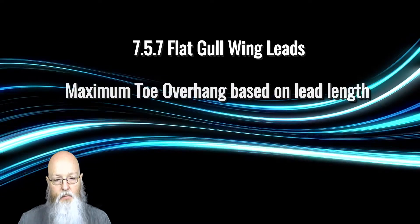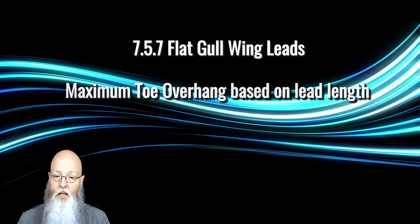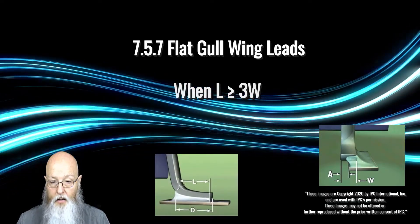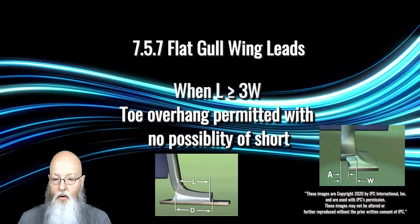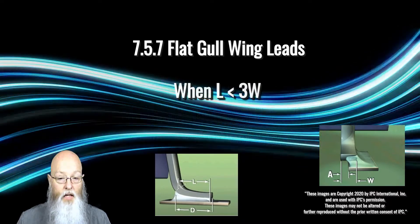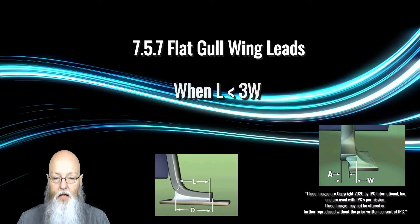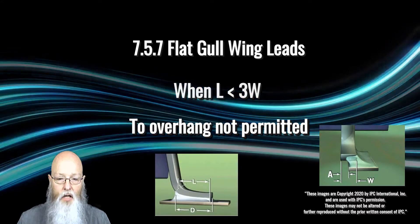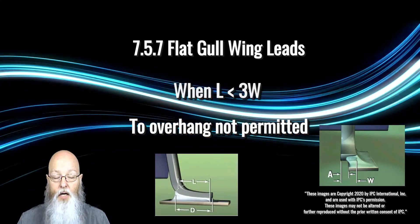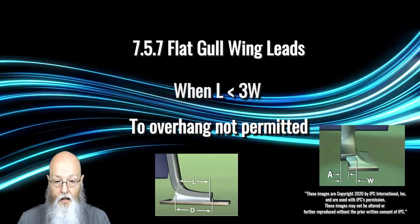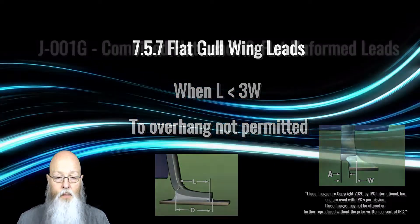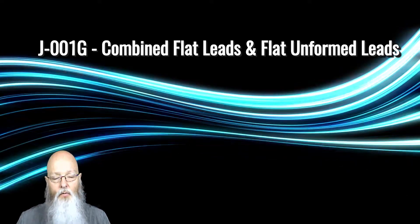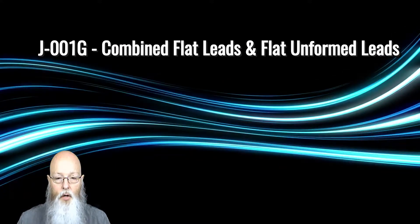On the other hand, the maximum toe overhang has been broken out based on lead length. With a longer lead — lead length greater than three times the lead width — toe overhang is permitted as long as there's no violation of minimum electrical clearance. For leads that have a total length less than three times the lead width, Class 2 and 3 do not permit toe overhang. With shorter leads, there's less area to make the connection, so for Class 2 and 3 operations it's necessary to have all of the short leads on and soldered to the pads. In Revision G, flat lugged leads and flat unformed leads were in a combined section. For clarity, these two items have been broken out into individual sections.